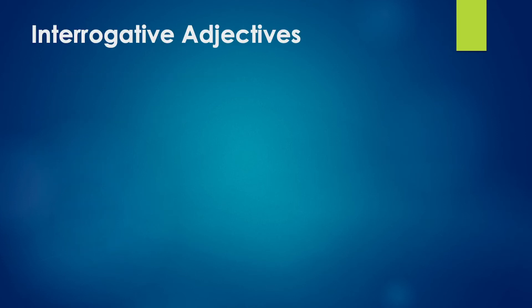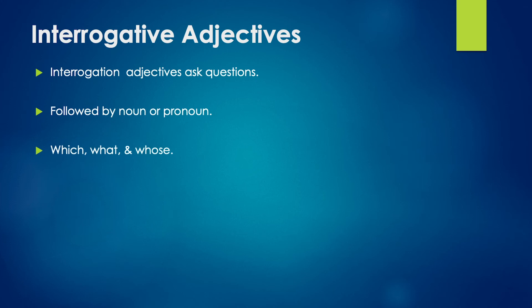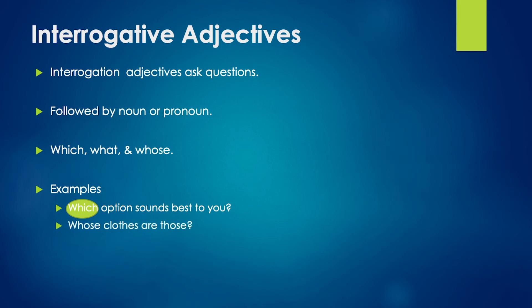An interrogative adjective asks a question. It must be followed by a noun or a pronoun. Which, what, and whose are the interrogative adjectives. For example, which option sounds the best to you? — in this sentence, which asks the question, so it is the interrogative adjective. Similarly, whose clothes are those? — whose is the question word, hence it is the interrogative adjective. In the same way, what game do you play? — here, what is the interrogative adjective.